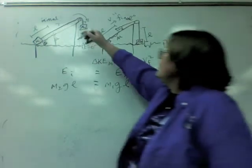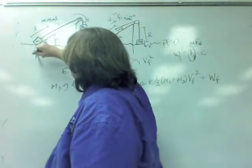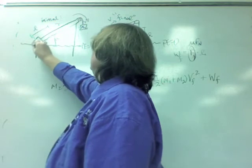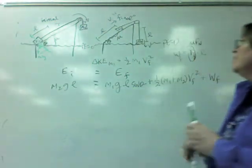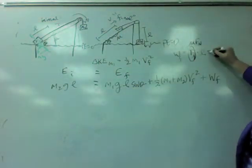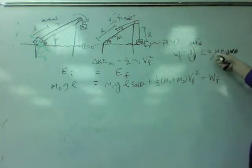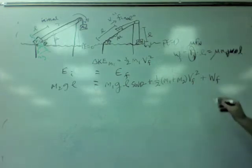And, the normal force, in this case, is our same old friend. If this is Mg, then this much is the normal force. This being theta, then the normal force is M1g cosine theta. And, don't forget, we've got the mu to make it friction, and the L to make it work. So, all that is right here.